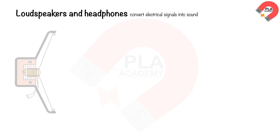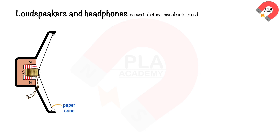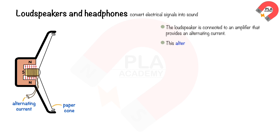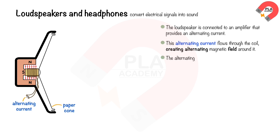Loudspeakers and headphones convert electrical signals into sound. A loudspeaker consists of a coil of wire wrapped around one pole of a permanent magnet. The loudspeaker is connected to an amplifier that provides an alternating current. This alternating current flows through the coil, creating an alternating magnetic field around it. The alternating magnetic fields interact with the field of the permanent magnet.